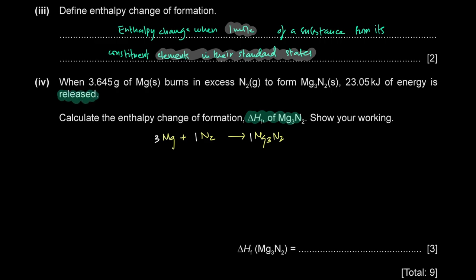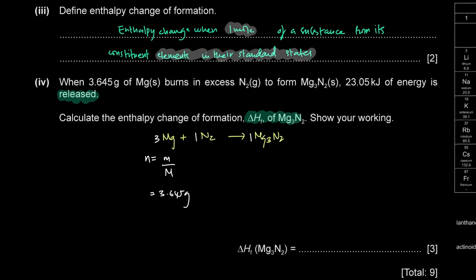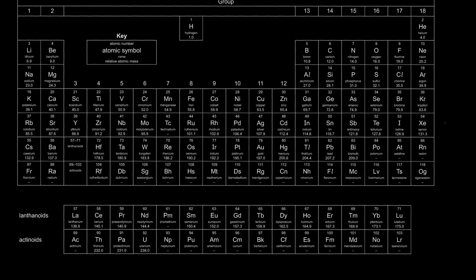The enthalpy change of formation is the energy per mole. So we take −23.05 ÷ 0.05 = −461 kJ/mol. The enthalpy change of formation of magnesium nitride is −461 kJ/mol.